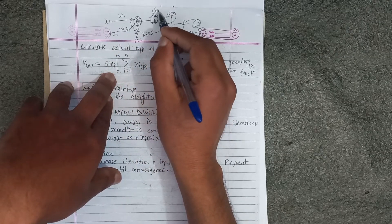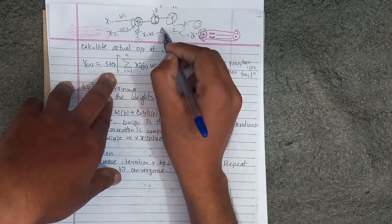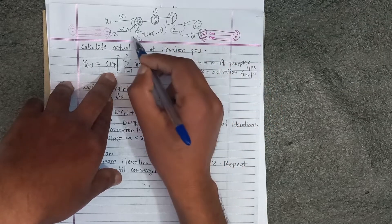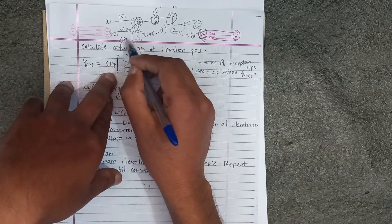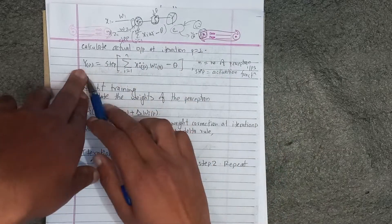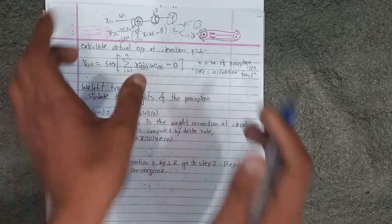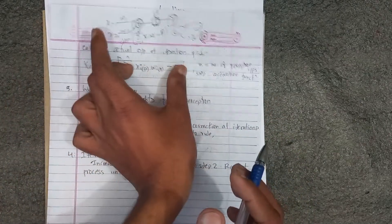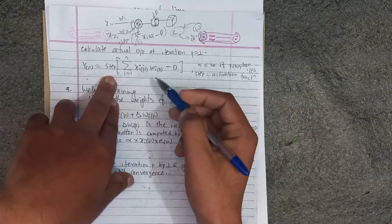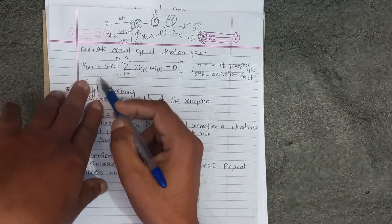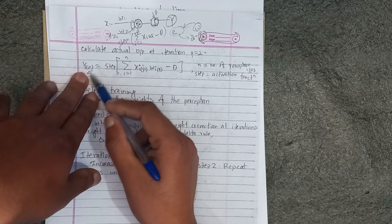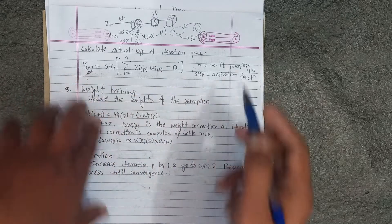If you look at the threshold value, you can see the output of the step function. You can observe the step function and see the actual output yi.